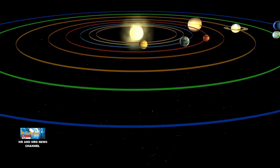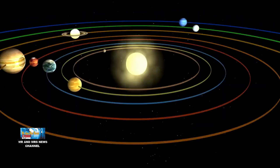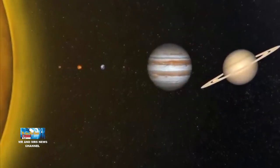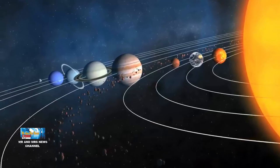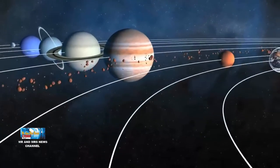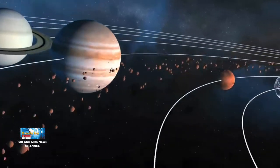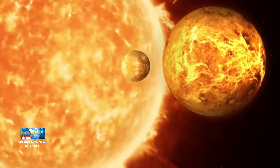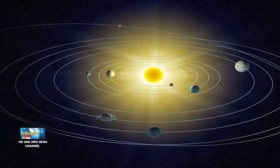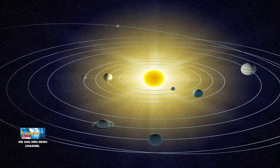Matahari sebagai pusat tata surya juga memiliki gaya gravitasi yang lebih besar dari benda langit lainnya. Gaya gravitasi dari matahari inilah yang kemudian menarik benda-benda langit lainnya untuk bergerak mendekatinya. Hal inilah yang menyebabkan planet-planet bergerak mengelilingi matahari karena planet-planet akan terpaksa bergerak dalam sebuah orbit untuk mengelilingi matahari.